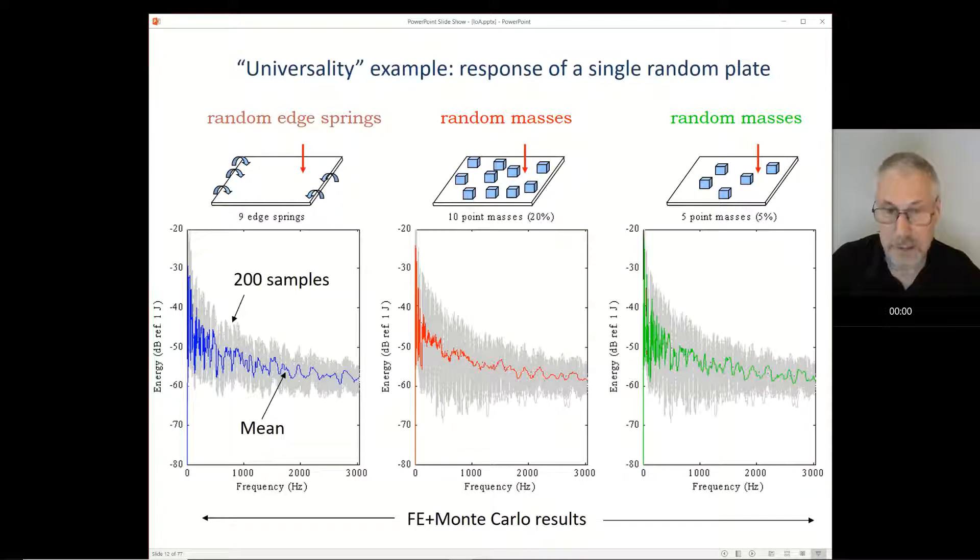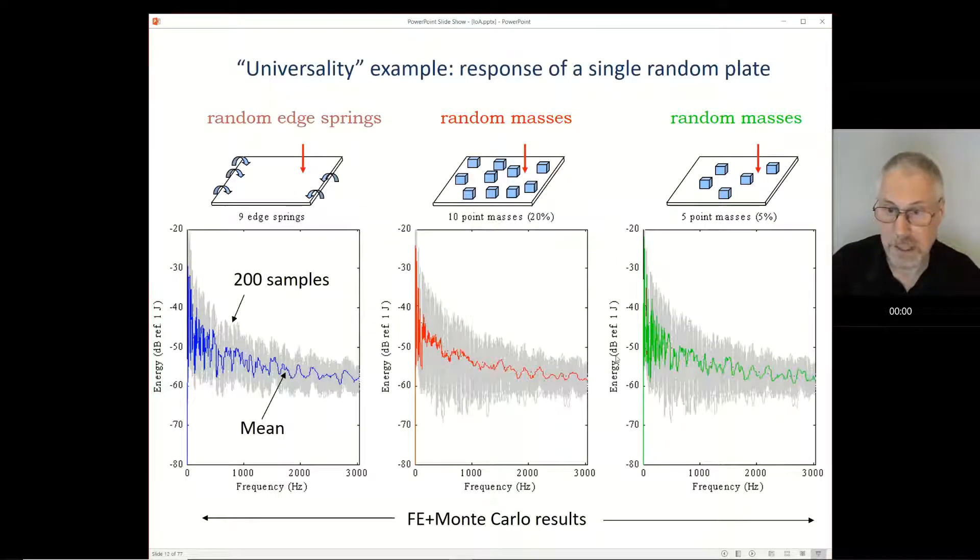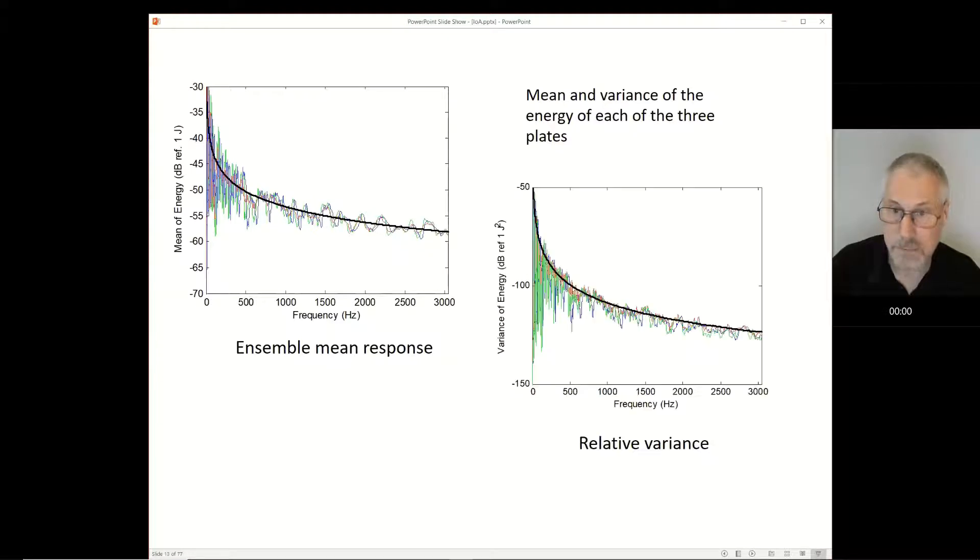The colored lines on the plot are actually the averages of those curves. One thing that seems apparent is that the colored lines seem to be about the same, even though we randomized these things in quite different ways. If we take those colored lines off the plots and put them together, we find they're very much the same. So regardless of how we've randomized the plate, we seem to get the mean response. The other thing is that the size of the cloud seems to be the same. We can measure that by measuring the standard deviation or the variance of the response, and again we find that all three plates seem to have the same variance.